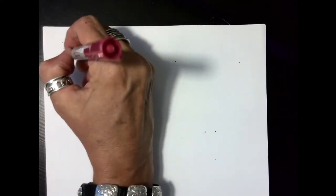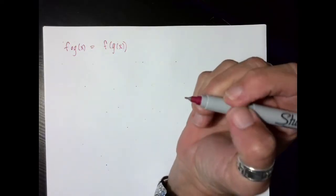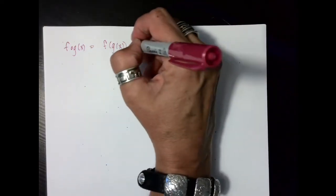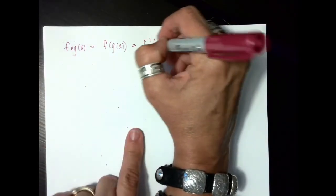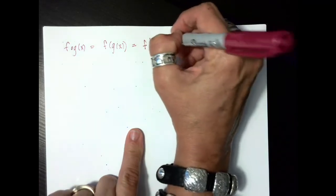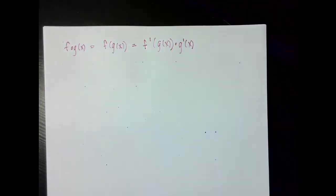Another way to think about the chain rule is with respect to a composition. So let's say I had f of g of x and I wanted to rewrite this as f of g of x. If I want to take the derivative, it's going to be f prime evaluated at g of x — what starts inside stays inside — times the derivative of the inside thing. It just depends on what makes your life easier.